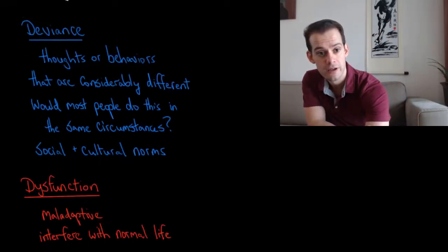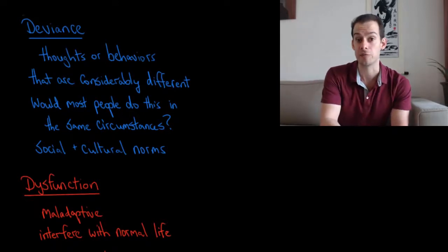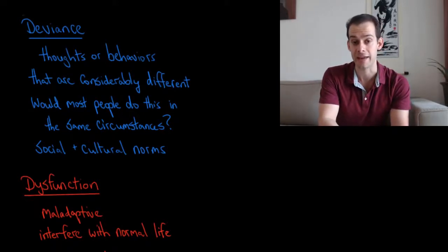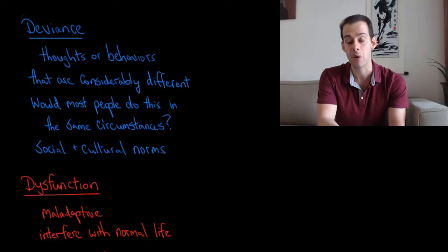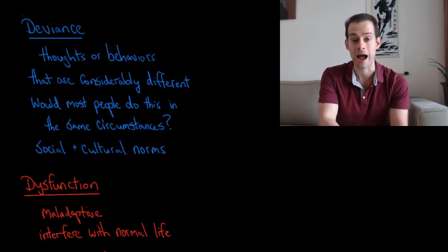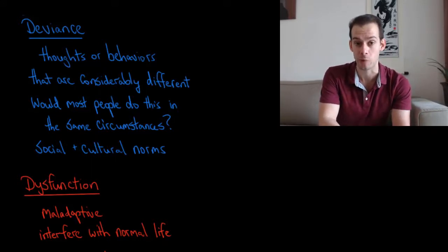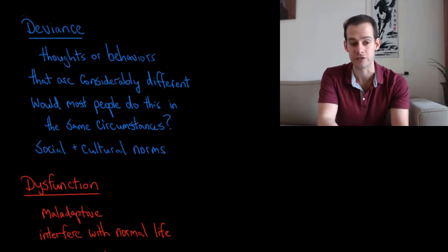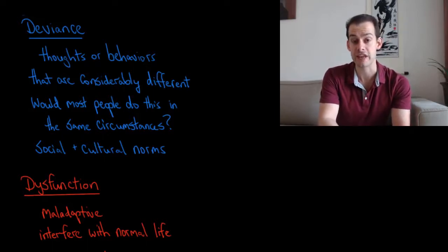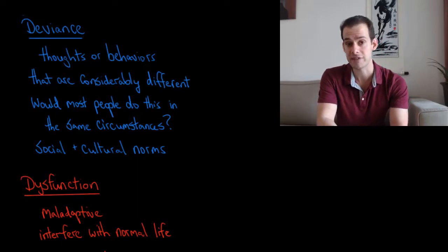So deviance refers to thoughts or behaviors that are considerably different from the thoughts and behaviors of most people. Now, this is mostly what we focused on in the previous video, thinking about how do we determine what's normal or abnormal, and obviously this is not easy to do as we saw. But one question we can ask is, would most people do this in the same circumstances? And circumstances are important.